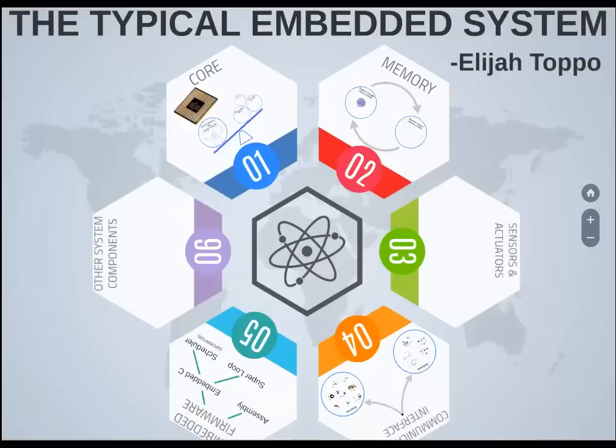In this video we'll try and focus on what an embedded system is actually made up of. A typical embedded system consists of many components. Six of them have been noted down here: core, memory, sensors and actuators, communication interface, embedded firmware, and other system components.